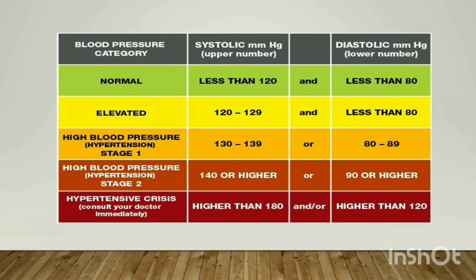A chart shows the blood pressure classifications: normal is systolic 120 mmHg and diastolic 80 mmHg. Elevated is systolic 120–129. High blood pressure stage 1 begins at 130 mmHg systolic. Very severe conditions occur when systolic is above 180 mmHg and diastolic is above 120 mmHg.